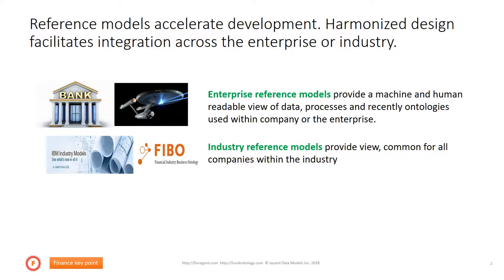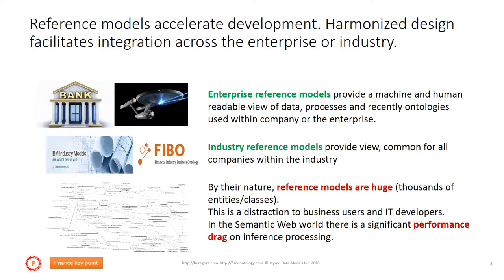And on the semantic side there is of course the Financial Industry Business Ontology (FIBO). By their nature, these reference models are huge — they can contain thousands of entities and classes. This is really a distraction to business users and IT developers who want to adopt a reference model, simply because the content is overwhelming. In the semantic world there is also a significant performance drag, because the ontology reasoner has to compute inferences across that huge model.